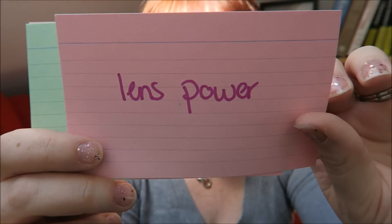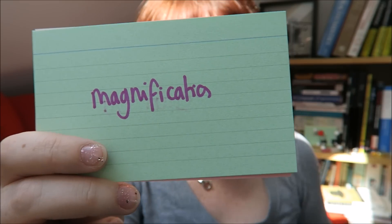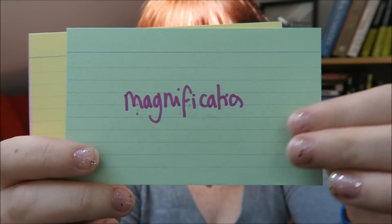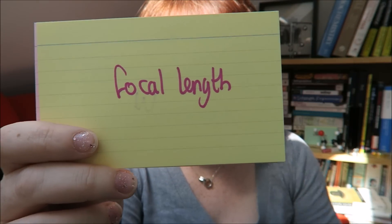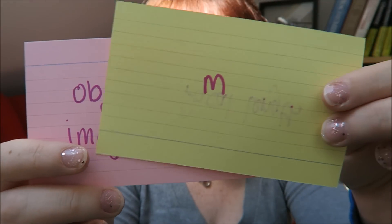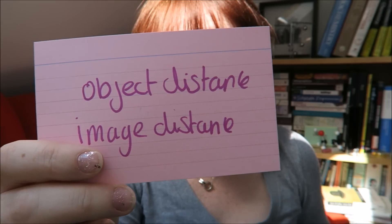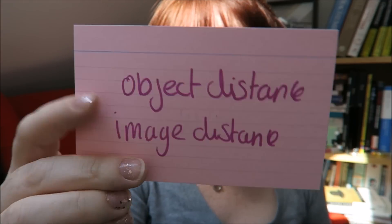Lens power is measured in diopters. Magnification has no units. Focal length is measured in meters. And object distance is measured in meters as well.